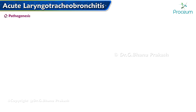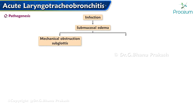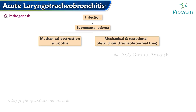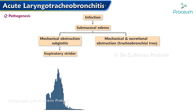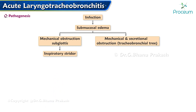Pathogenesis: Infection can cause submucosal edema, leading to mechanical obstruction in the subglottis, or combined mechanical and secretional obstruction in the tracheobronchial tree. Mechanical obstruction in the subglottis manifests as inspiratory stridor, while mechanical and secretional obstruction manifest as a prolonged inspiratory phase with wheezing.